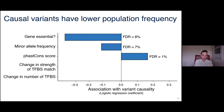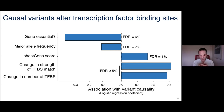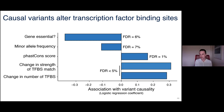Kaushik also looked mechanistically: the more a variant changes predicted transcription factor binding to a promoter, the more likely it is to result in a gene expression change. He tested this for individual factors, weak binding, strong binding, sense, and antisense — the result was always the same. Greater predicted disruption of TF binding predicts causality.